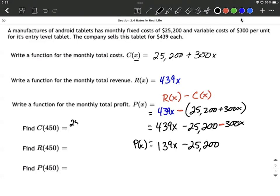that would be $25,200 plus $300 times 450, which I'm getting my calculator out to help on this one, I think that works out to be $160,200. Our revenue is pretty similar. This time it's going into the revenue function. $439 multiplied by 450.